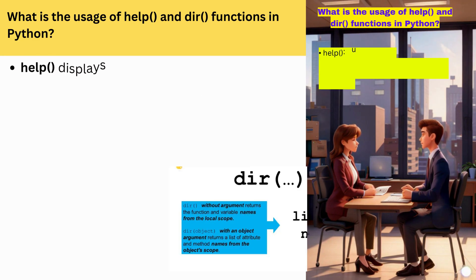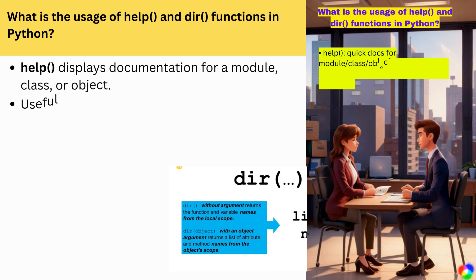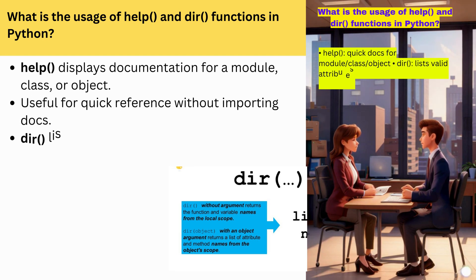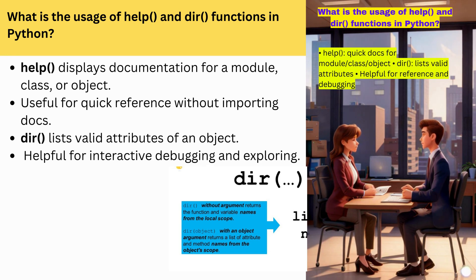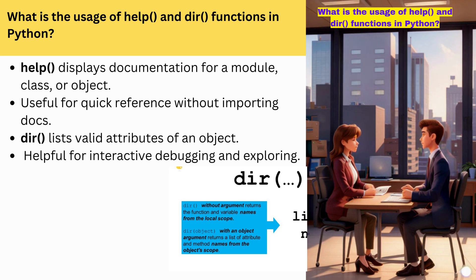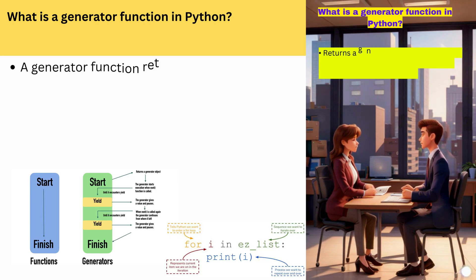What is the usage of help() and dir() functions in Python? help() displays documentation for a module, class, or object — useful for quick reference without importing docs. dir() lists valid attributes of an object, helpful for interactive debugging and exploring.